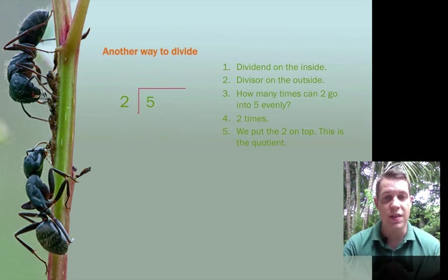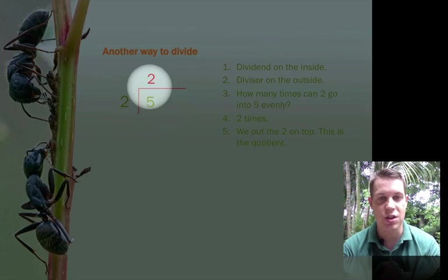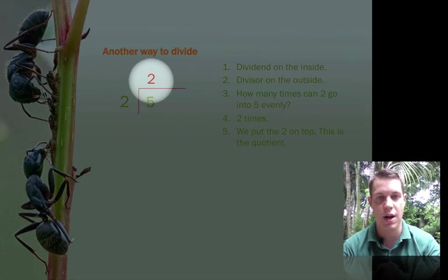So, 2 can go into 5 evenly 2 times. We put the 2 on top and this is, of course, our quotient. So now, the answer to our division problem, the quotient, goes on top.